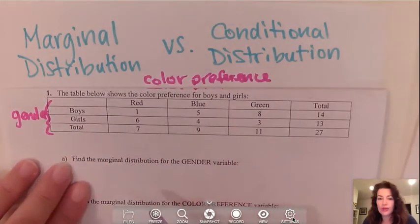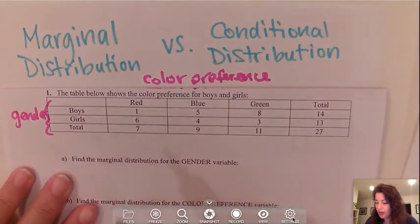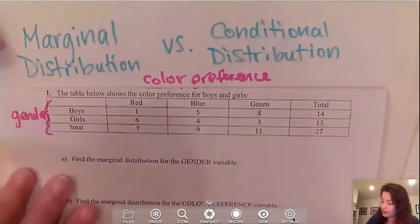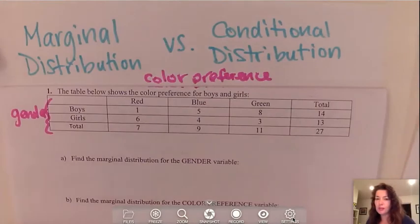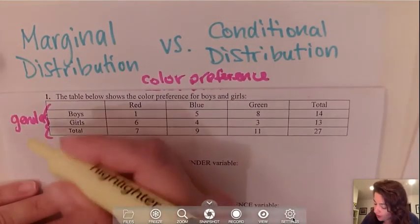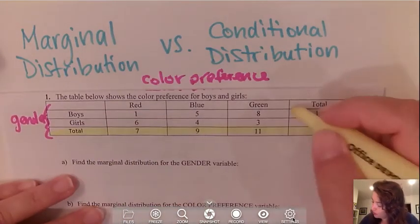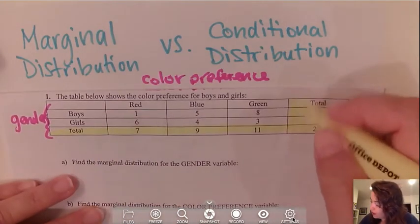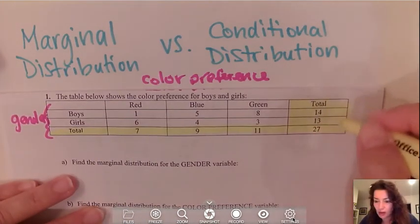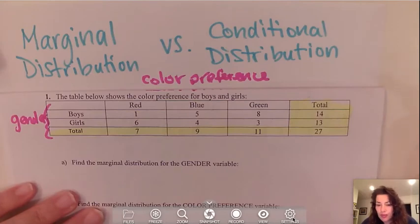Now if we want to know the marginal distribution, basically as the word states it's the margin of your table, which are your totals. So my marginal distribution are the margins where the totals are. You need to be careful because not all tables have the totals, so if they do not have a total you need to draw it in or write it in.